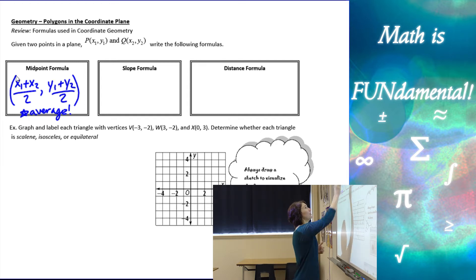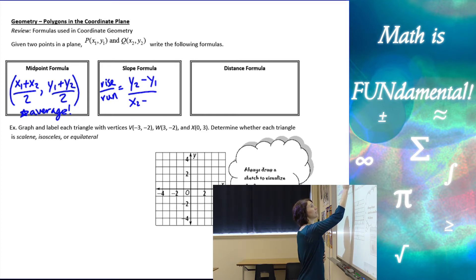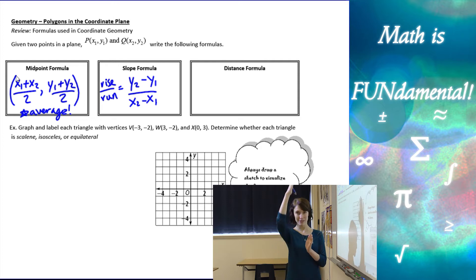Alright, slope formula, we have rise over run, or y2 minus y1 over x2 minus x1. Remember when you're rising on a graph, you're going in the y direction. When you're running, you're going in the x direction. So y's go on top and the x's go on the bottom.